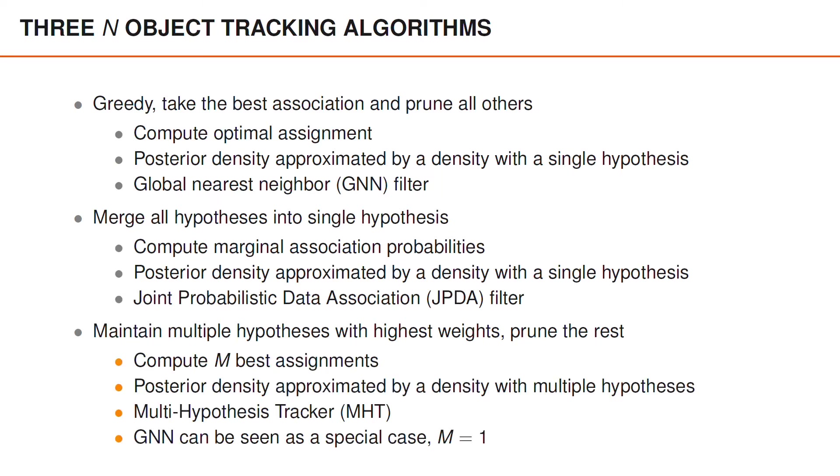And the last type of algorithm is based on computing the M best assignments in each time step. So now the posterior is approximated by a density with multiple hypotheses. And the resulting tracking algorithm is called multi-hypothesis tracker or MHT. And actually GNN can be seen as a special case of MHT where M is set to be equal to 1.